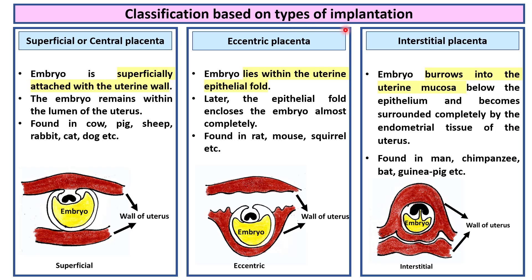Based on types of implantation, there are three types of placenta: superficial placenta, eccentric placenta, and interstitial placenta. In superficial or central placenta, the embryo is superficially attached with the uterine wall. The embryo remains within the lumen of the uterus — it stays in the lumen of the uterus. This is found in cow, pig, sheep, rabbit, cat, dog, etc.